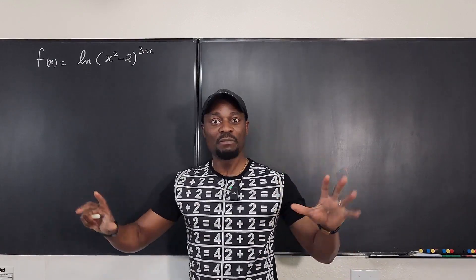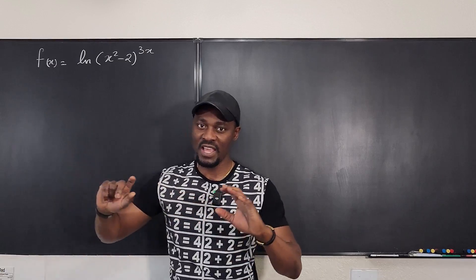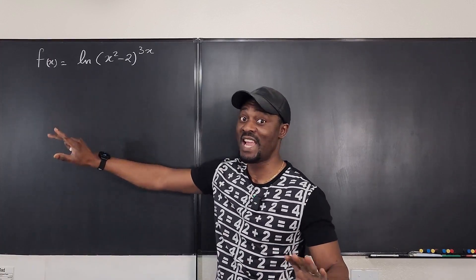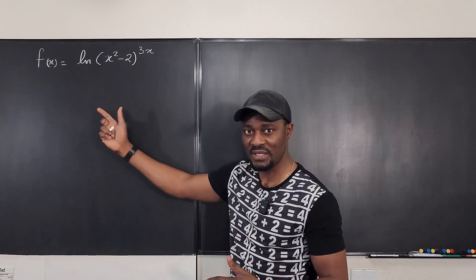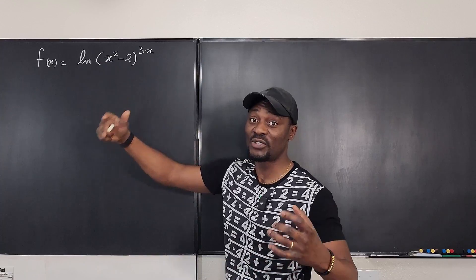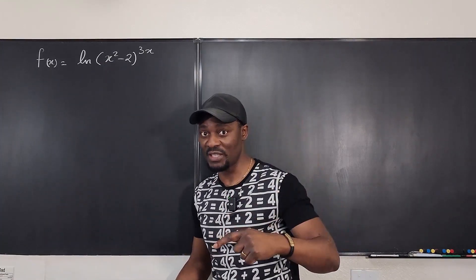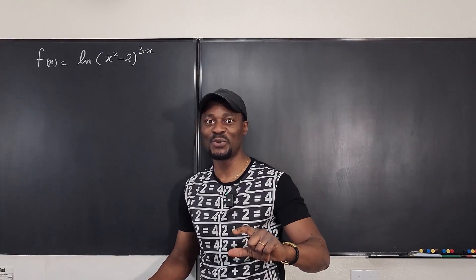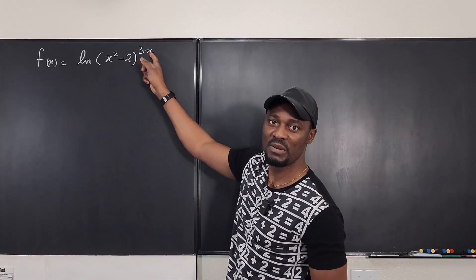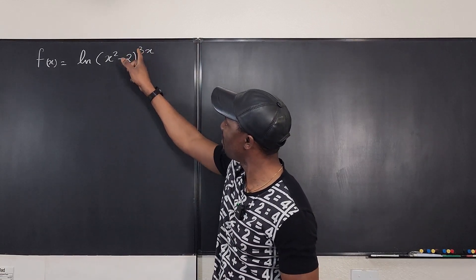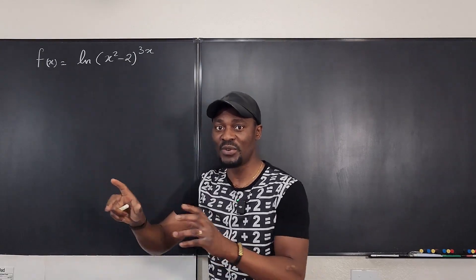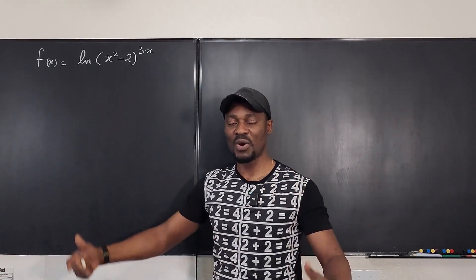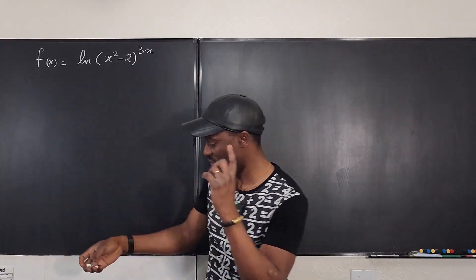We just want to have polynomials — x raised to some power with numbers multiplying it. But right now we have a natural log, and we don't want that. To create a rational expression, remember that taking the derivative of a natural log function gives you a rational expression. For example, the derivative of ln(x) is 1/x. We can handle the 3x factor by pulling it out, dealing with the rational expression, then bringing it back since it's a polynomial.